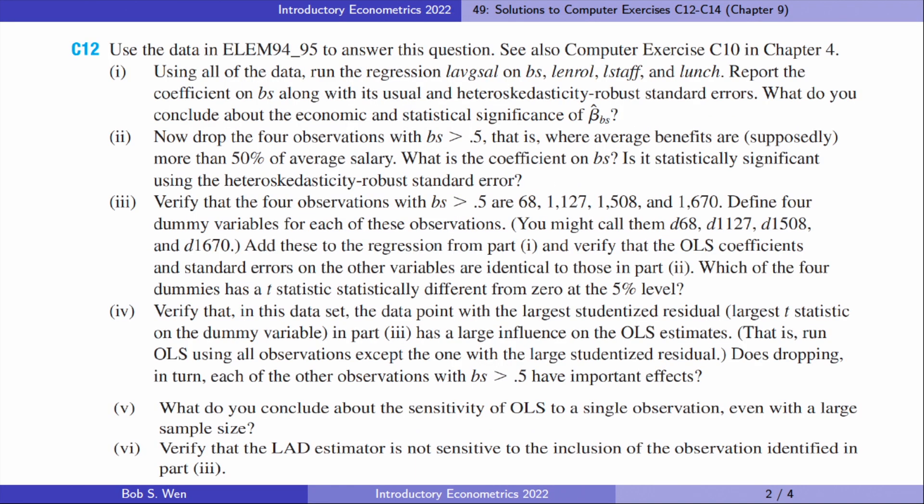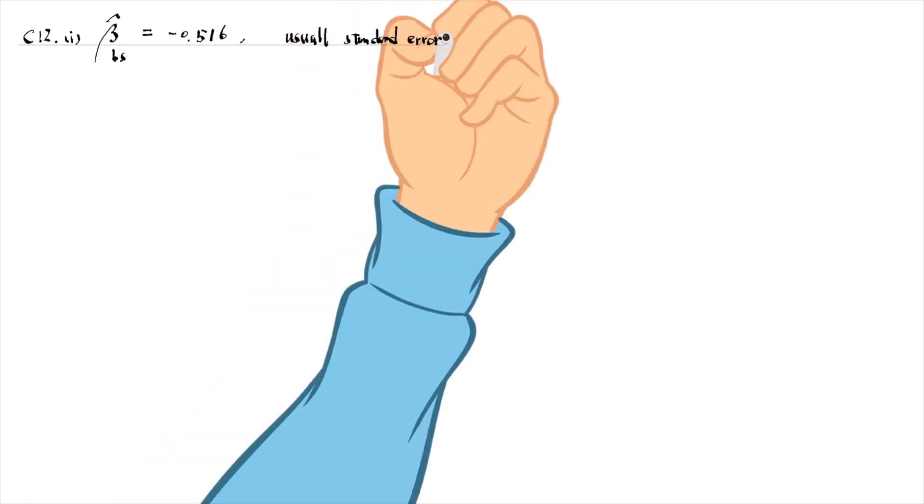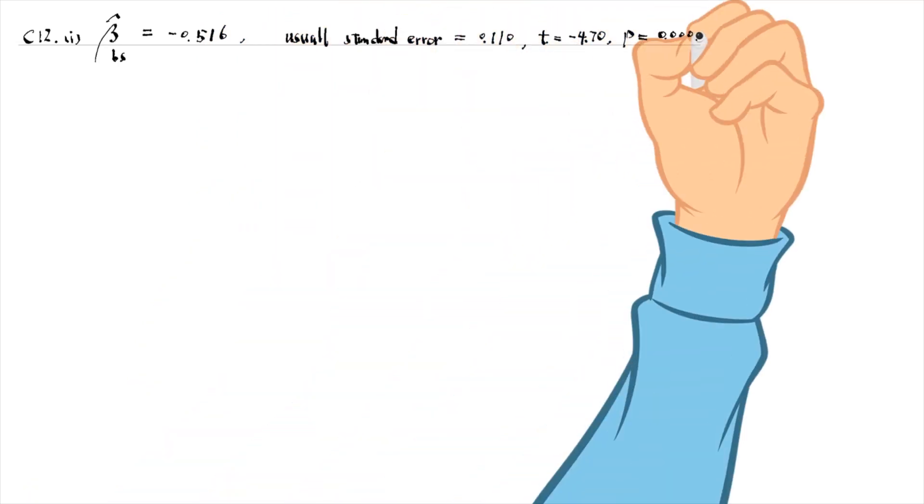For Computer Exercise 12, the coefficient on BS is minus 0.516, and its usual standard error is 0.110. The t-statistic is minus 4.70, and its p-value is 0 to 3 decimal places. It is statistically different from 0 at the 1% level.